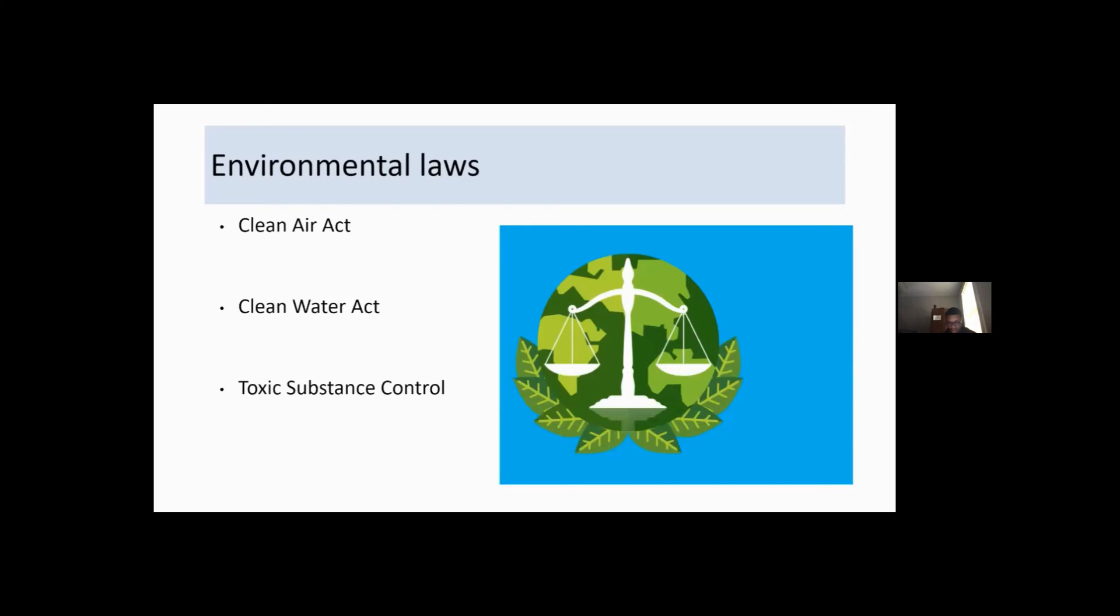And then for the last one, the Toxic Substance Control, 15 U.S. Code 2601. It requires manufacturers and importers to test chemicals if EPA suspects risks. So basically if you have any chemicals that you're bringing on or anything like that, making sure that EPA doesn't think it's going to be a risk to the environment and mess up anything.